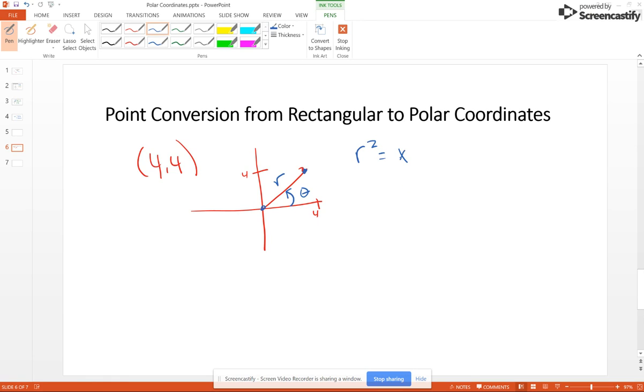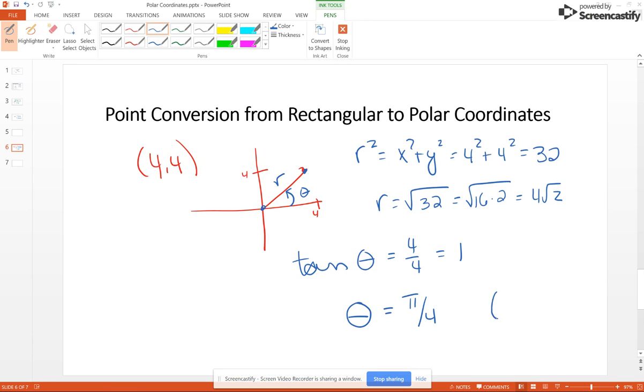Well, r squared is x squared plus y squared. So that's going to be 4 squared plus 4 squared is 32. So r is the square root of 32, which is the square root of 16 times 2, 4 square root of 2. Now tangent of theta is going to be 4 over 4 because it's y over x, which is 1. So the quadrant 1 angle that has a tangent of 1 is π over 4. So 4 square root of 2, π over 4.